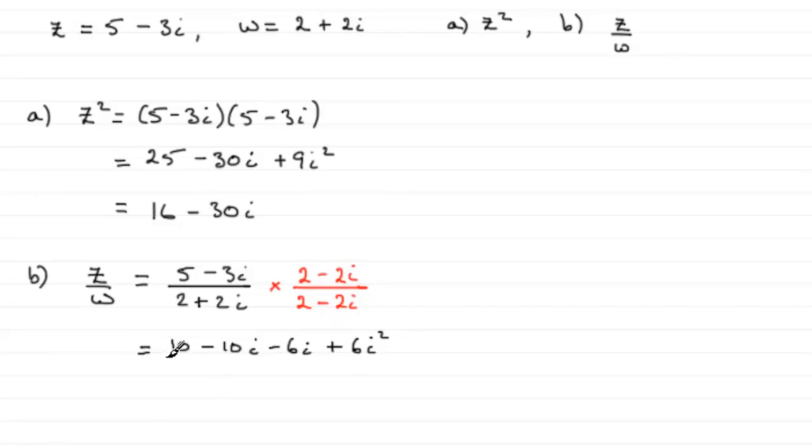And that's all divided by, and if we multiply out the bottom, we've got 2 times 2 which is 4, then we've got 2 times minus 2i which is minus 4i, 2i times 2 which is plus 4i, and finally plus 2i times minus 2i which is minus 4i squared.